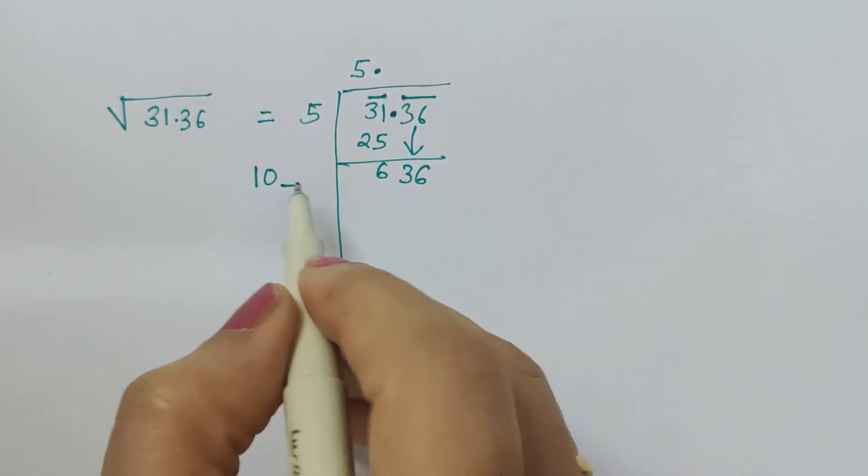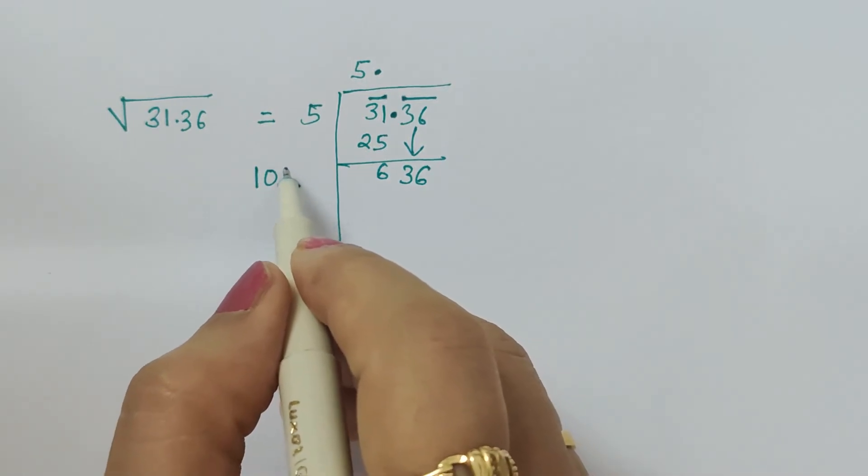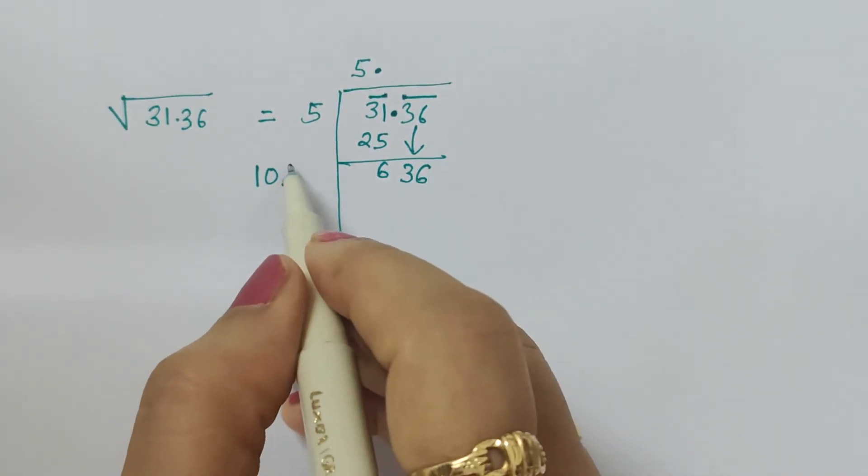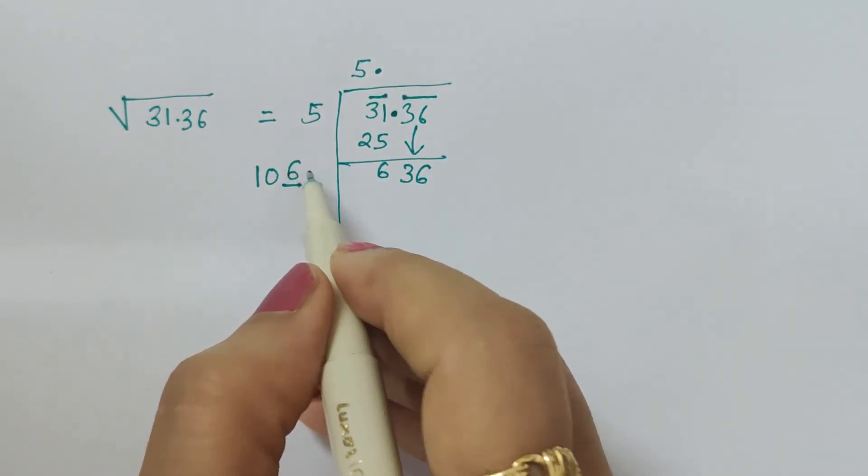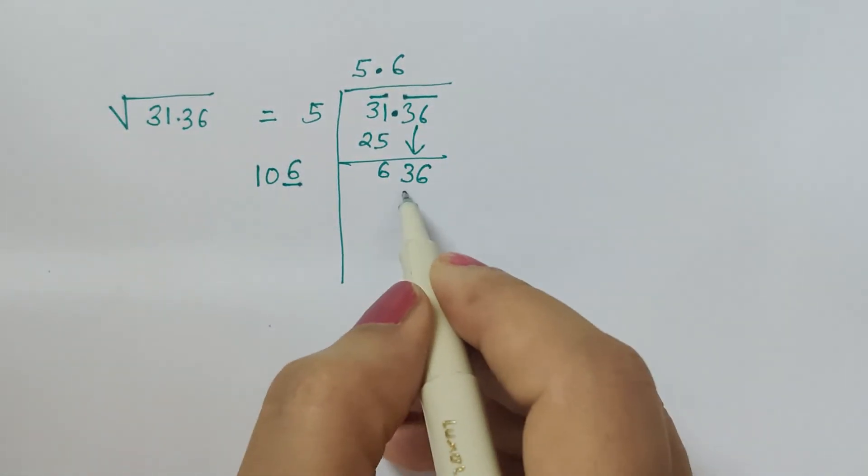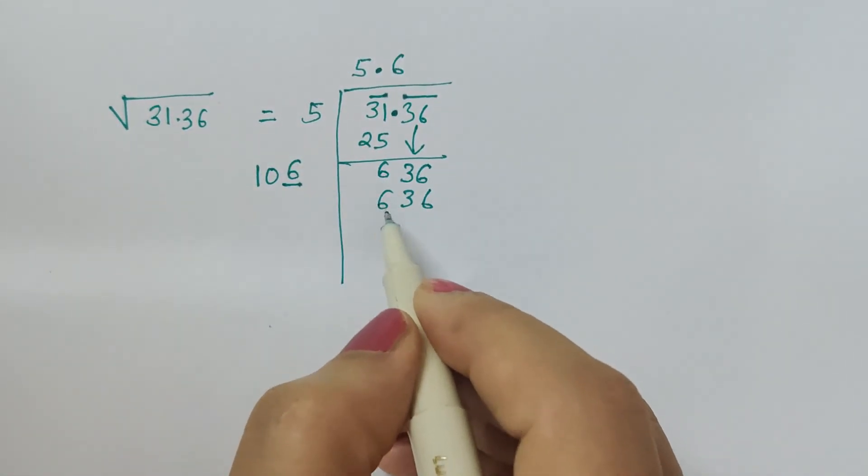Next, what extra digit will give a value equal to this or just less than this? If we do it with 7, it will exceed, so obviously we have to go with 6. 106 into 6 gives 636.